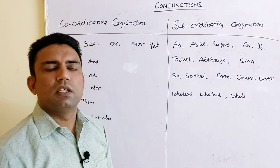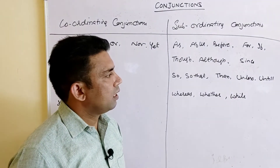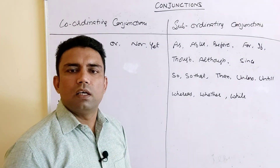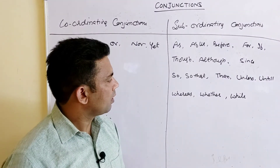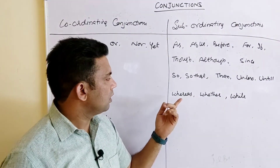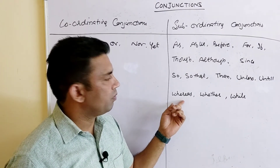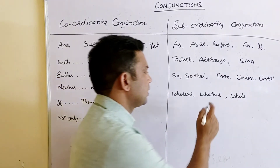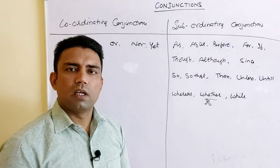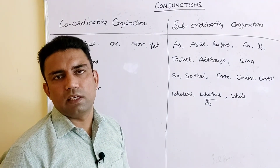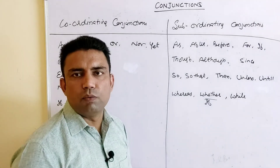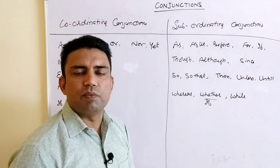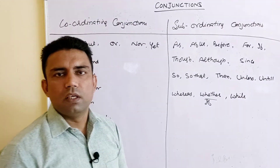'Unless' and 'until' are both about conditions in a negative sense: 'He will help you unless you promise.' 'Whether' is used in place of 'if': 'Run there whether you want to attend the class.' 'While' is used for time: 'The accident took place while I was waiting for someone.'